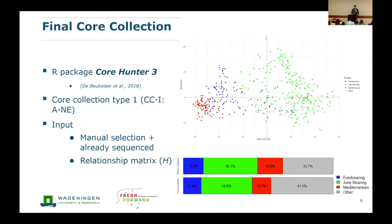To complement our manual selection with the current genetic variation, we used a nice R package, Core Hunter, which already implements the different types of core collection from Odong et al. — type one, type two, and others. We put what we already have sequenced, plus the manual selection, into the Core Hunter package and asked it to select the genotypes that complement the core collection the most to reach the type one goal. Something that made me realize this actually works is that in red we have a Mediterranean part of the breeding program, which has a small, narrow basis in the PCA plot — and even though there are more individuals overall, the core collection selects fewer of them from that group.